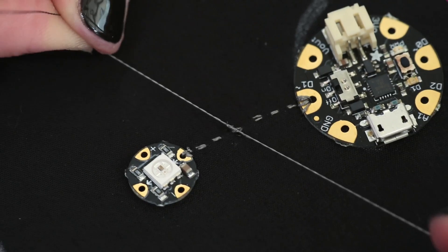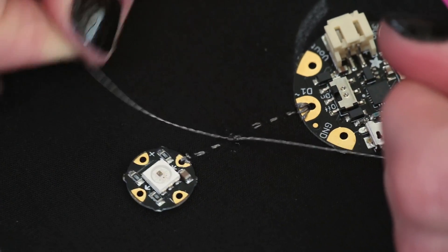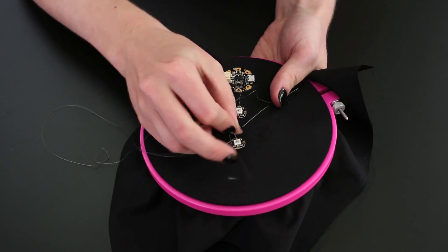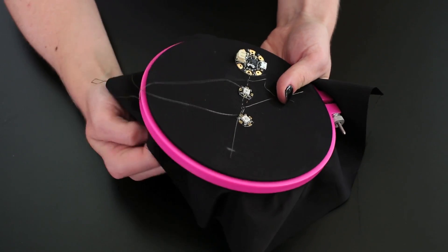As it's drying, keep tugging on the thread tails to keep the knot tight. And when it looks like nothing's moving anymore, you can sew another data line from the output of this pixel to the input of the next. But don't trim your thread tails yet.